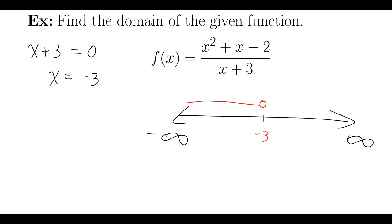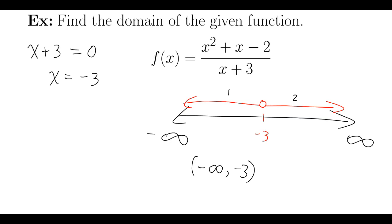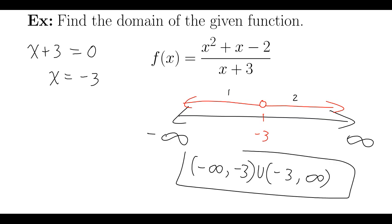That breaks the domain into two sections. The first one being negative infinity to negative 3. The second one being negative 3 to positive infinity. And there's a u in between, representing the union of the two intervals.